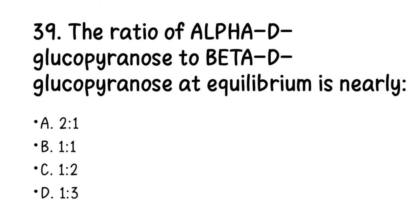Number 39. The ratio of alpha-D-glucopyranose to beta-D-glucopyranose at equilibrium is nearly: A. 2:1, B. 1:1, C. 1:2, D. 1:3. At equilibrium, the right answer is 1:2 — you will have more beta-D-glucopyranose.